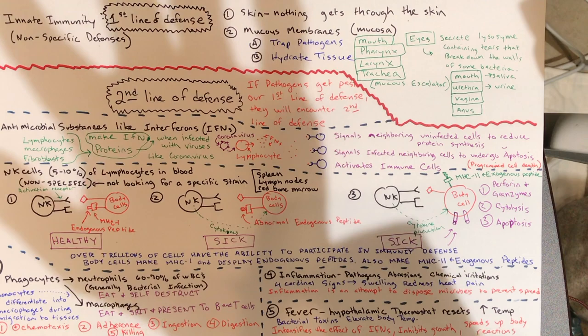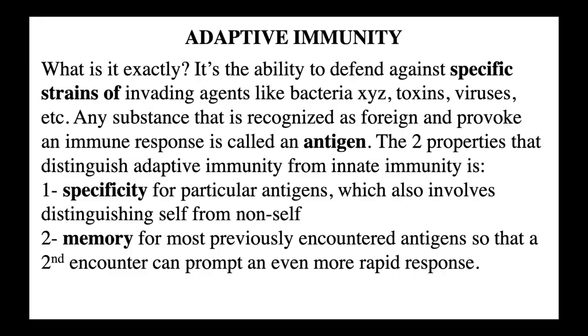Here's the whole innate immunity picture from beginning to end. Now that we've covered everything in innate immunity, we're going to move on to adaptive immunity — this is really the last piece of the puzzle. Adaptive immunity is the ability to defend against specific strains of invading agents like bacteria, toxins, or viruses. Any substance recognized as foreign that provokes an immune response is called an antigen.